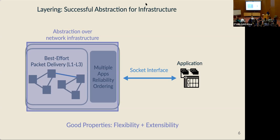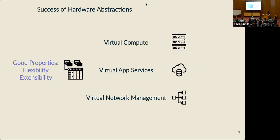Why has the network stack been so successful and what lessons can we learn from that success? One of the big lessons is that layering is really powerful, and providing layered abstractions over underlying hardware has helped application developers achieve flexibility and extensibility — being able to change their applications rapidly despite changes in the underlying network infrastructure. This idea of providing abstractions over hardware and infrastructure is really one of the big ideas that's made modern applications adaptable and flexible across many components, including compute and managed versions of crucial components like databases and storage.